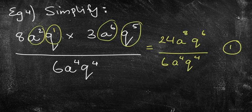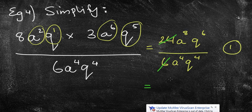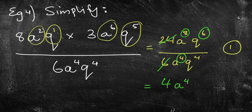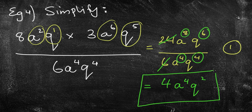The second mark now comes from simplifying. 24 divided by 6, that goes exactly into 4. Now I'm dividing these, so I'm going to minus the powers. 8 take away 4 is just 4. I'm going to minus the powers again. 6 take away 4 is 2. So I'm just left with 4A to the power of 4, Q squared.